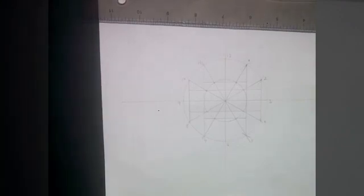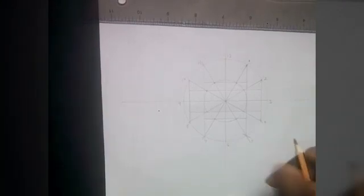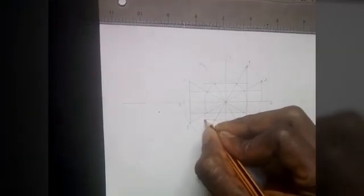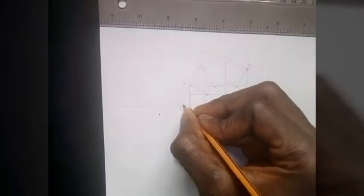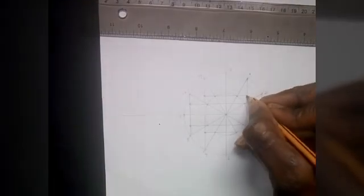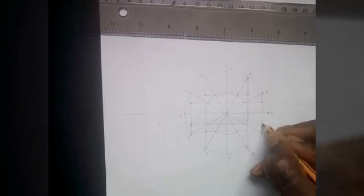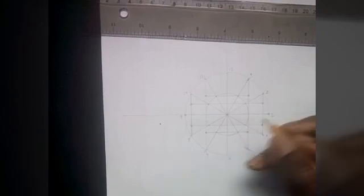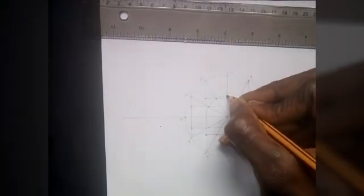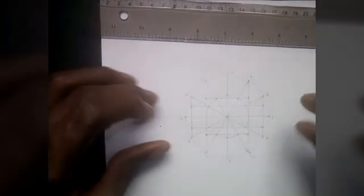Now we have gotten the points we need. This is the first point, second point, third, fourth, fifth, sixth, seventh, eighth, ninth, tenth, eleventh, and twelfth. These are the points we use to draw our ellipse.